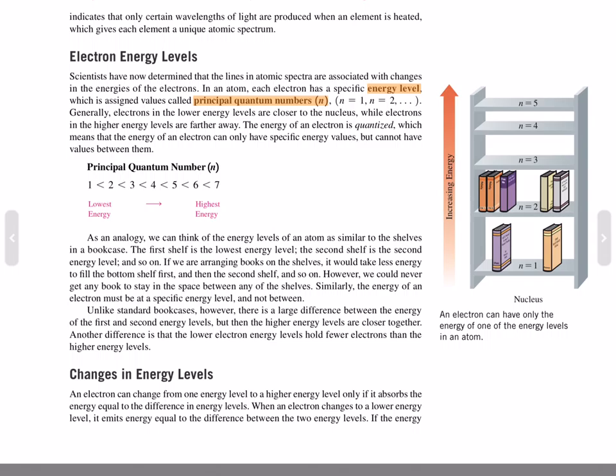Changes in energy levels. An electron can change from one energy level to a higher energy level only if it absorbs the energy equal to the difference in energy levels. When an electron changes to a lower energy level, it emits energy equal to the difference between the two energy levels.